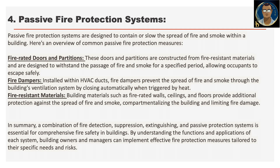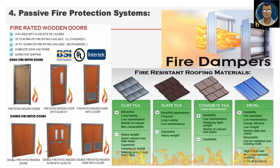Passive fire protection systems are designed to contain or slow the spread of fire and smoke within a building. Common passive fire measures include: fire-rated doors and partitions, which are constructed from fire-resistant material and designed to withstand the passage of fire and smoke for a specified period, allowing occupants to escape safely. Fire dampers installed within HVAC ducts prevent the spread of fire and smoke through the building ventilation system by closing automatically when triggered by heat. Fire-resistant materials such as fire-rated walls, ceilings and floors provide additional protection against the spread of fire and smoke.